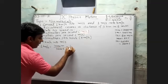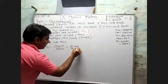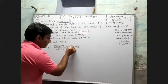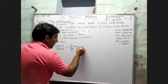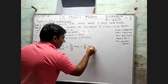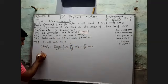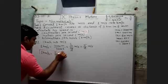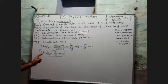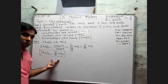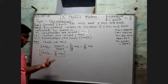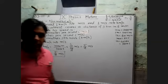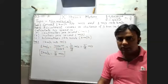So we get 1000 divided by 3600, which simplifies to 5 upon 18 meter per second. So one kilometer per hour equals 5 upon 18 meter per second. This is a standard formula — you have to remember this, as it will help while solving numerical problems.